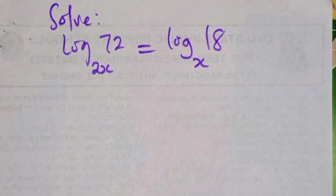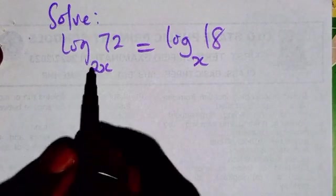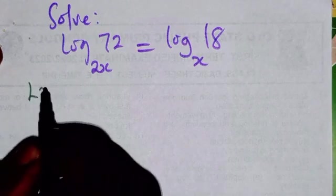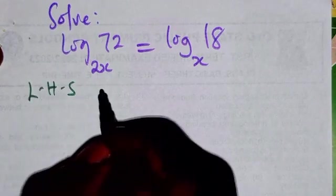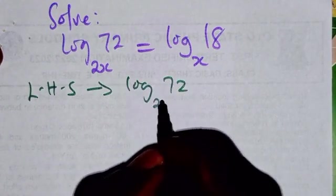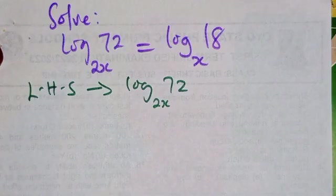What we're going to do here is I will first solve and evaluate the left hand side, considering log base 2x of 72 equal to y. I will solve that completely, then I will take the right hand side also.